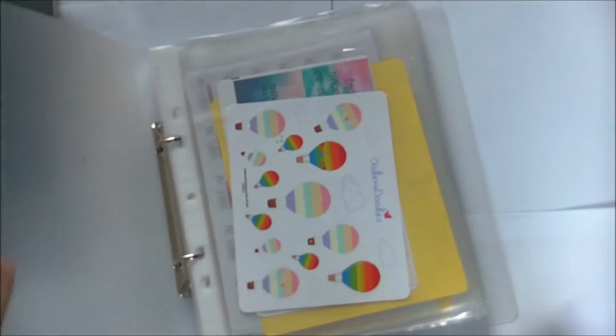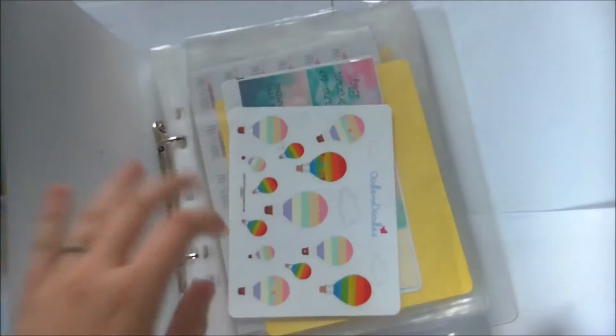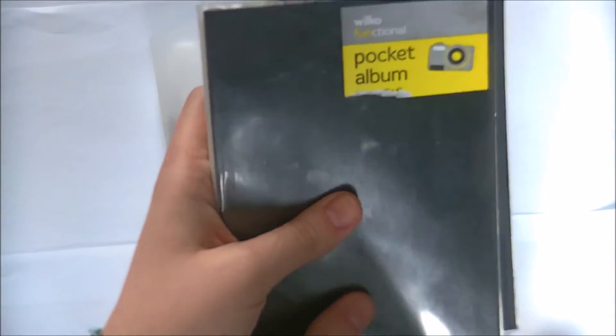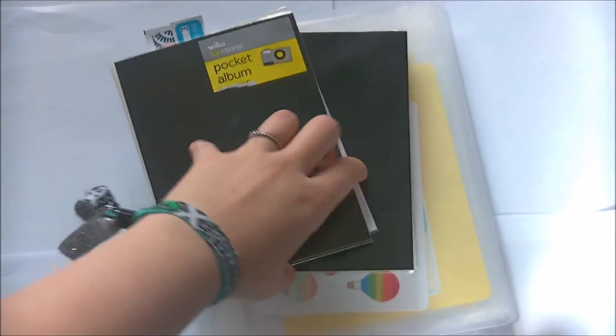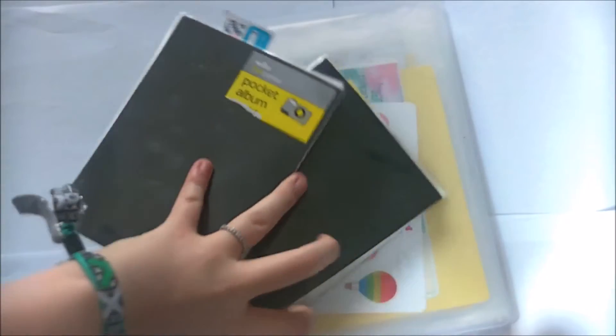I have this A5 folder with pockets in, and then I use these two little pocket photo albums which are from Wilkinson's. They're about 75 pence each and these hold my smaller stickers. I'll do a quick flick through what's in each.